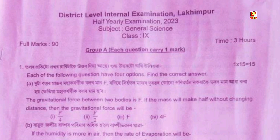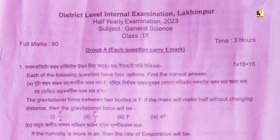The gravitational force between two bodies is F. If the mass is made half without changing the distance, then the gravitational force will be B.